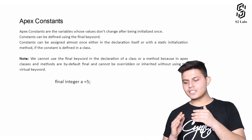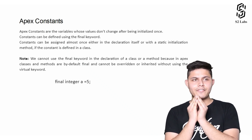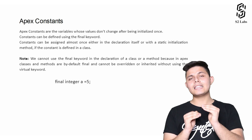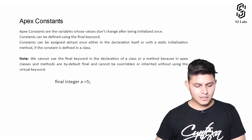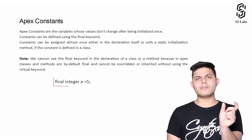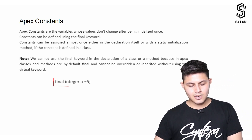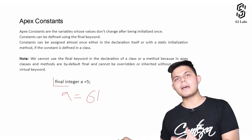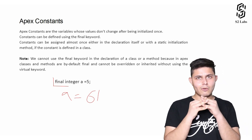Now let's understand what Apex constants are. A constant is something which cannot be changed or updated. If you want a variable's value to not change after it is declared in the program, you can make it a constant by declaring it with the 'final' keyword. That means if you later try to write something like 'a = 61', it will throw an error saying the value of a constant cannot be changed once declared.